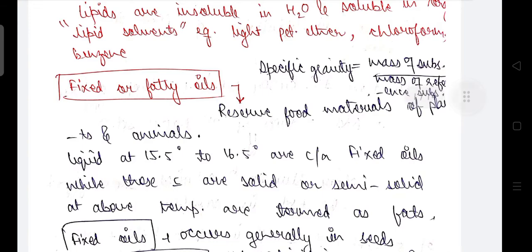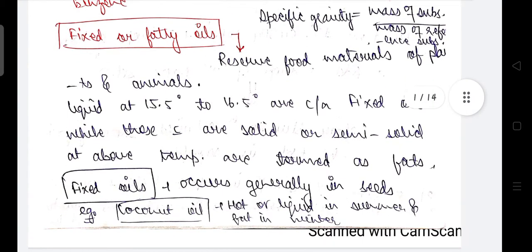Fixed or fatty oils are reserved food materials of plants and animals. Those that are liquid at 15.5 to 16.5 degrees Celsius are called fixed oils, while those which are solid or semi-solid above that temperature are termed as fats.